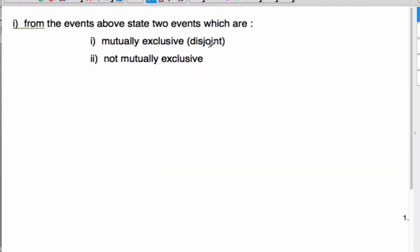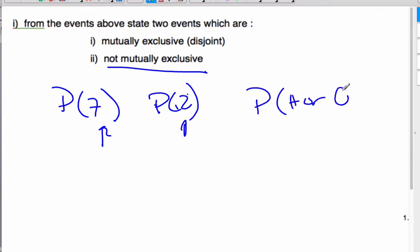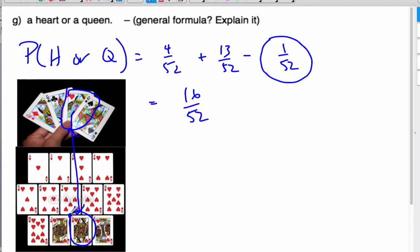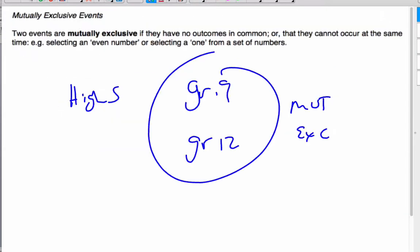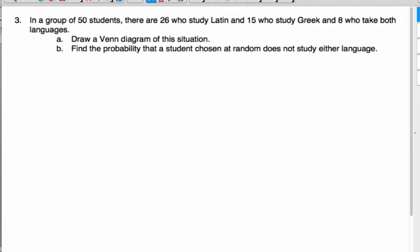So, if I consider of my events above, mutually exclusive would be the probability of the seven, the probability of the two. These two events, choosing a seven and choosing a two, are mutually exclusive. The ones that are not mutually exclusive could have been the probability of a heart or a queen because there was an overlap region here. The queen of hearts was the overlap, and so it was not mutually exclusive, whereas these ones were because I had all my sevens and all my twos. There was no overlap. So, that is mutually exclusive.